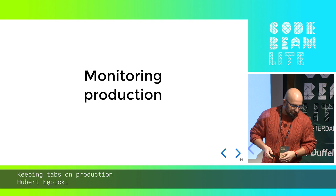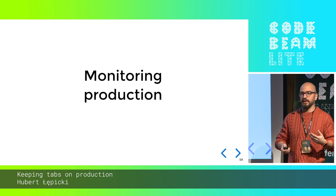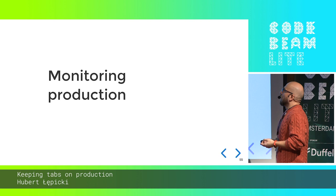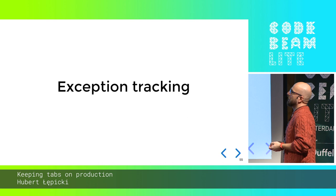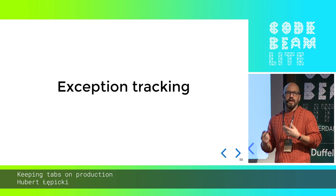Now, production monitoring. Before things happen to the customer, we can find out they will be happening — before a customer emails us, we can already know about problems. That's probably the best situation to be in. One thing we can do is implement some exception tracking, and you probably don't want to implement it from scratch. There are libraries and services that provide this, but let's look at how one would implement exception tracking in Elixir.